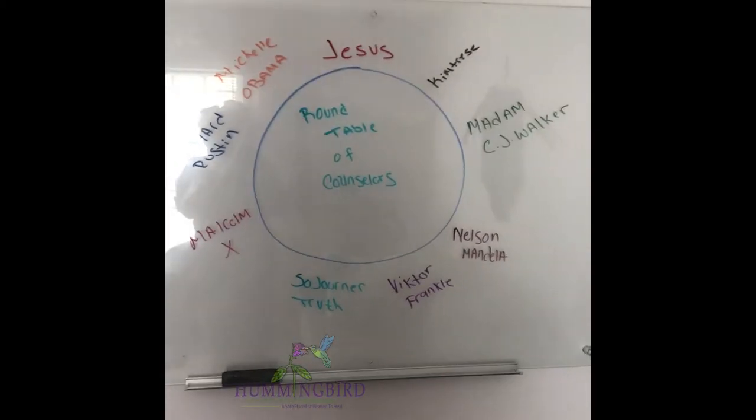It's called the Round Table of Counselors. Basically, what you're doing is imagining yourself at a round table with counselors — people that you would choose, people that you would find influential in your life. Who would be at your table? Whether they are alive or dead. The people you sit at your table are people you have to study, because you have to know the kind of advice they would give you based on the questions you're asking. I'm going to show you my round table of counselors so you can recreate this activity for yourself.